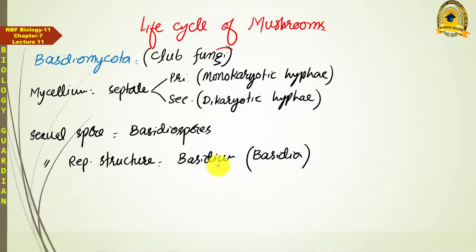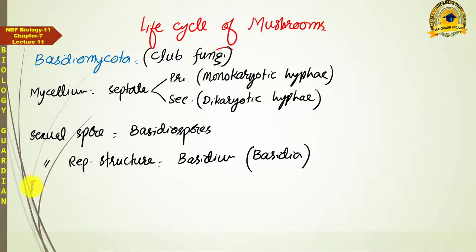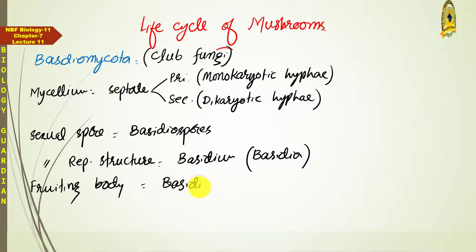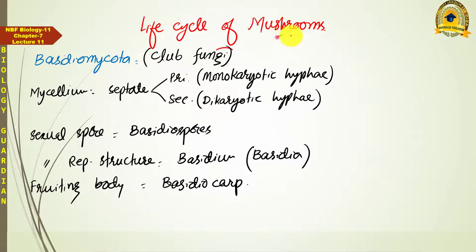The third point to remember is that in these fungi, basidia gather in large numbers to form a fruiting body. That fruiting body is known as basidiocarp. So these were some fundamental characteristics of Basidiomycota whose life cycle we are going to discuss.